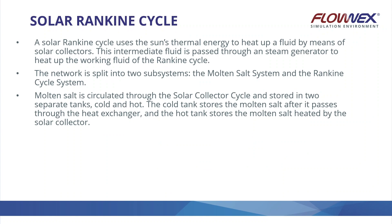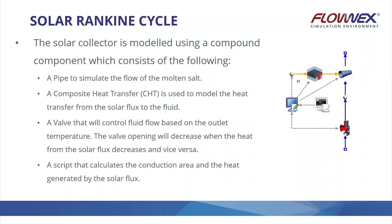A Solar Rankine Cycle uses the sun's thermal energy to heat a fluid via a solar collector. The intermediate fluid passes through a steam generator to heat the working fluid of the Rankine cycle. When simulating, we split the network into two subsystems: the molten salt system and the Rankine cycle system. The molten salt is circulated through the solar collector and stored in two separate tanks — a cold tank and a hot tank. The solar collector is modeled using a compound component in Flonex.